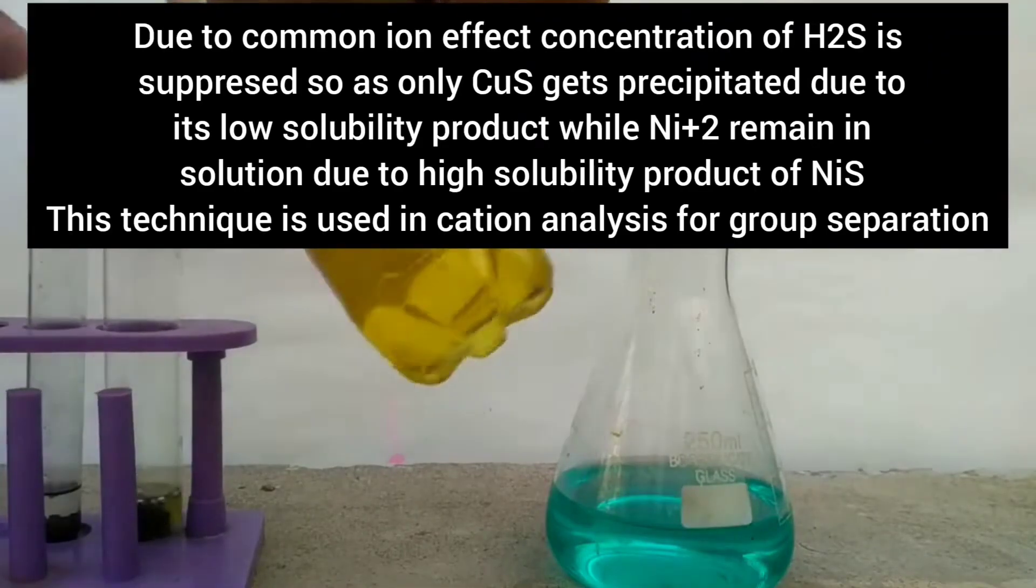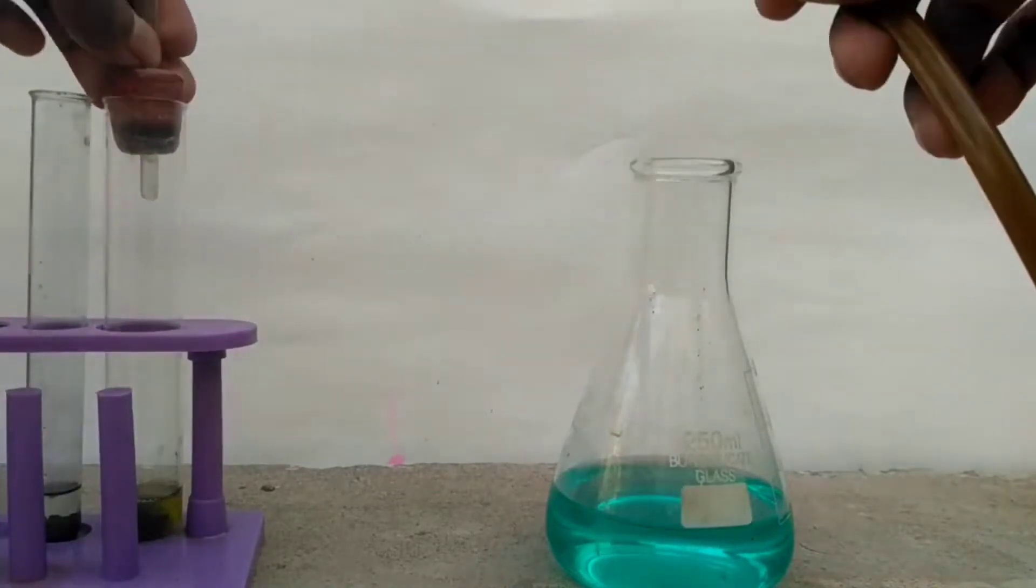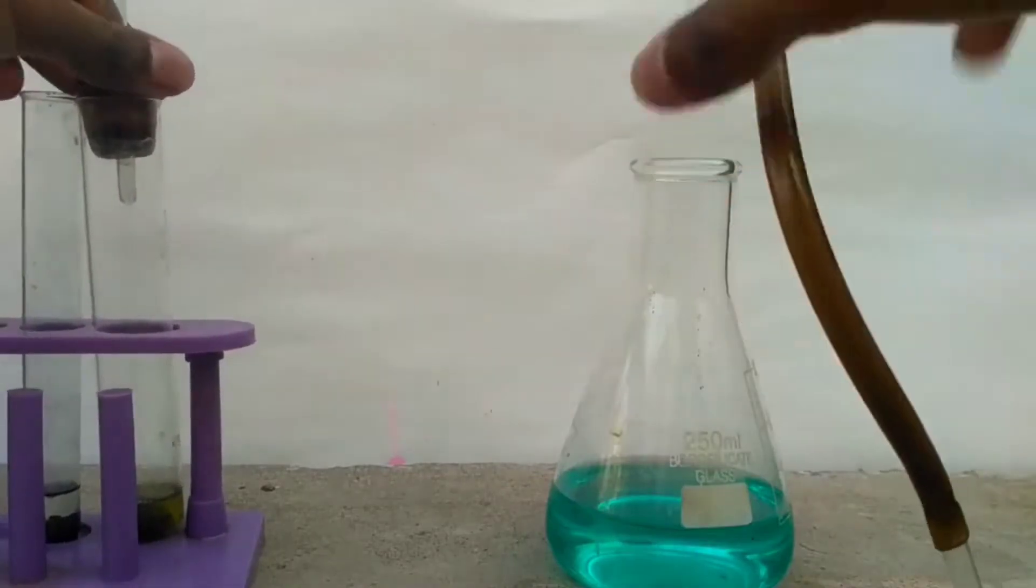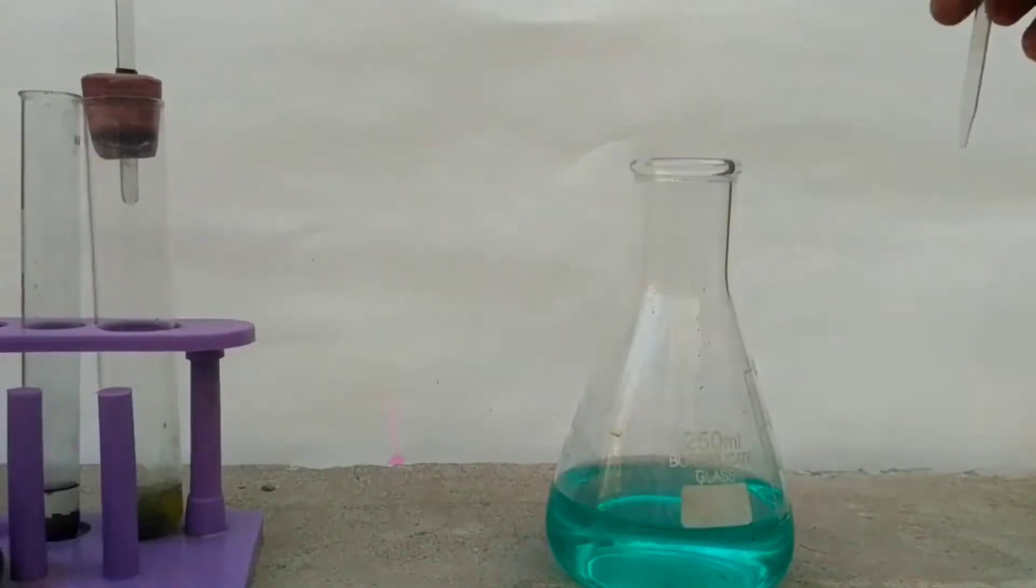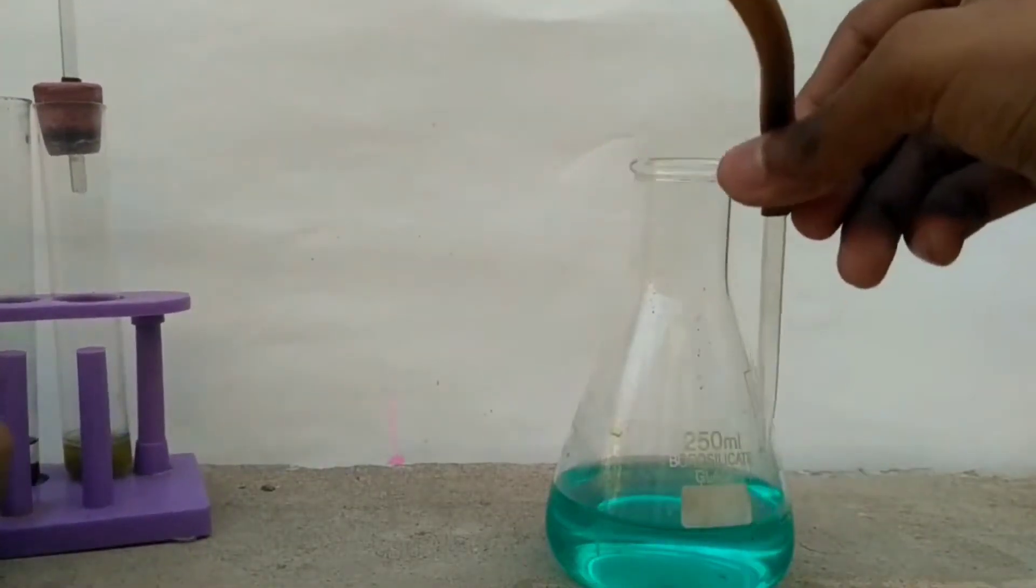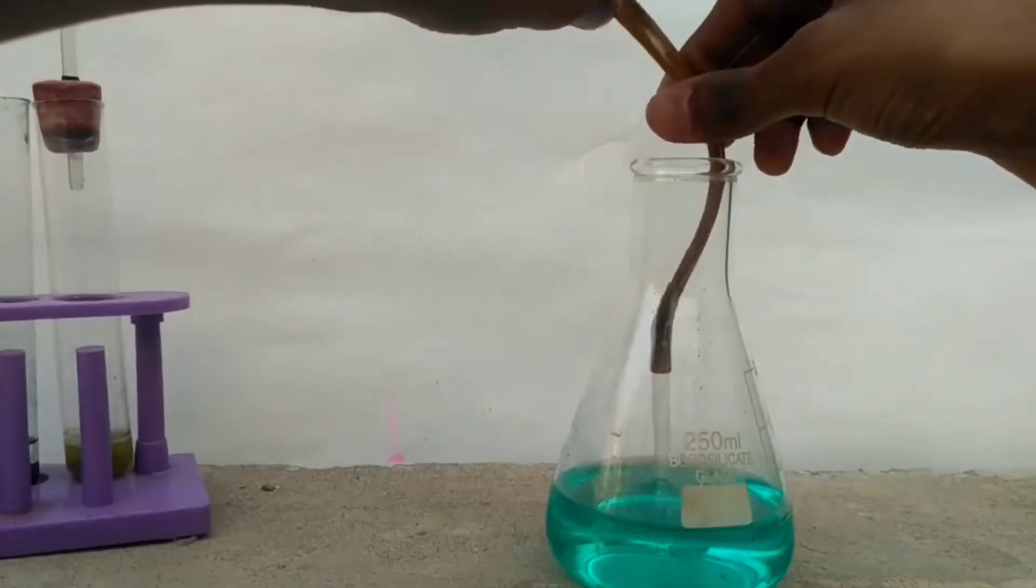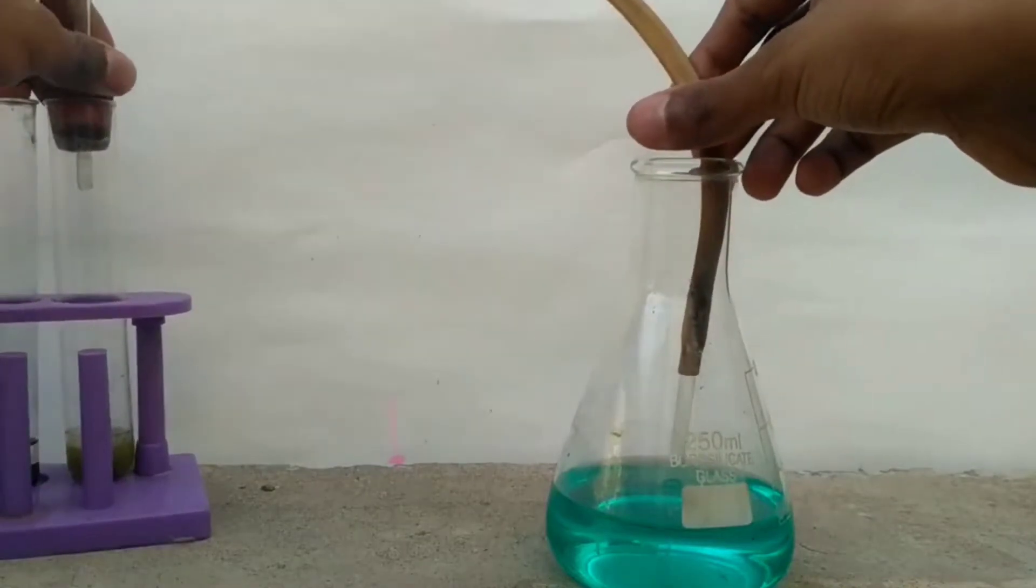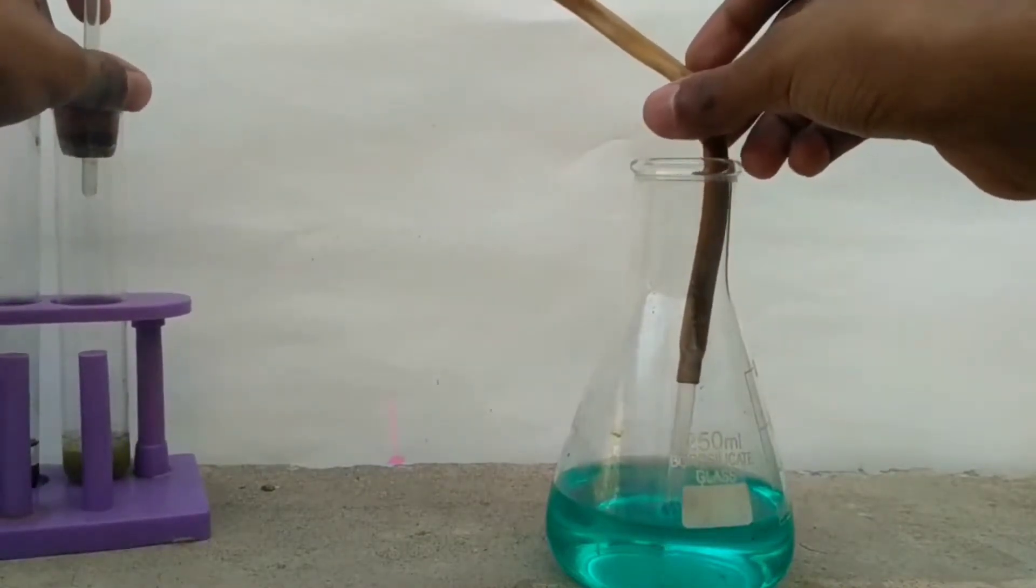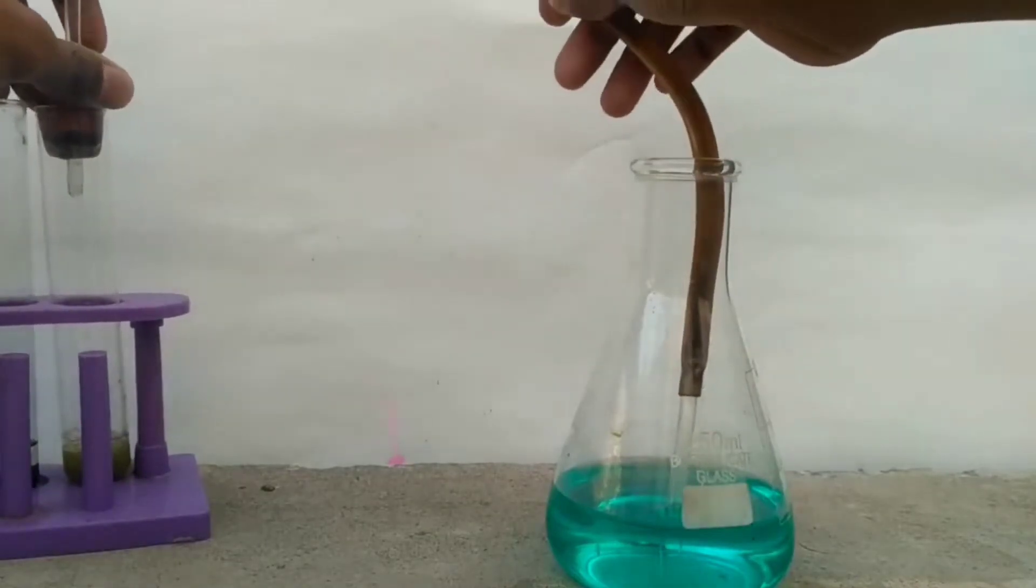This is due to the common ion effect. In acidic medium, concentration of hydrogen sulphide becomes so less that only sulphides of group 2 get precipitated, in which copper is present. Group 4, in which nickel is present, does not get precipitated. That is, it stays in solution. So the same principle I will be using here to separate copper ions from nickel solution.